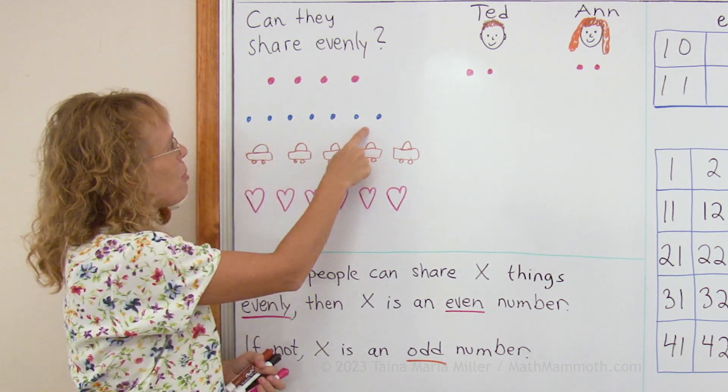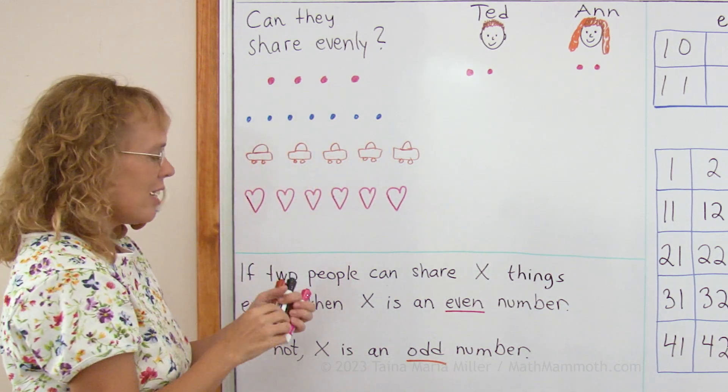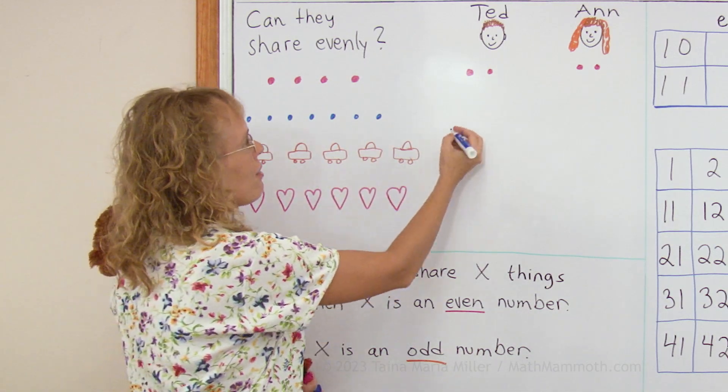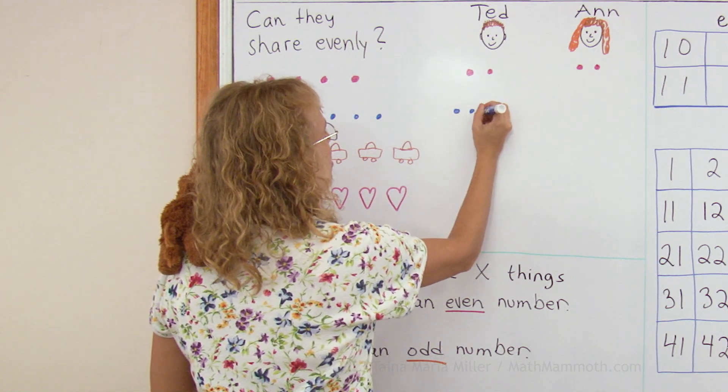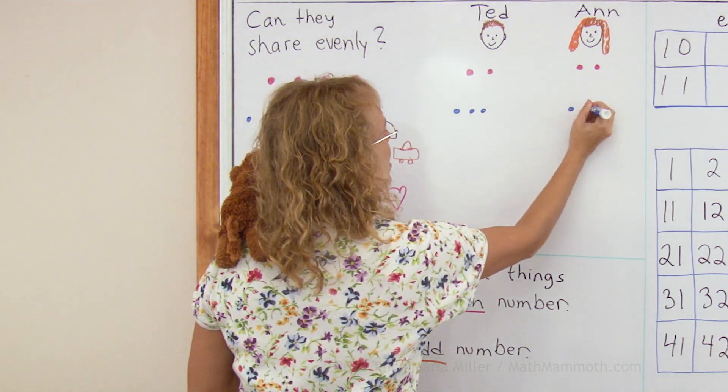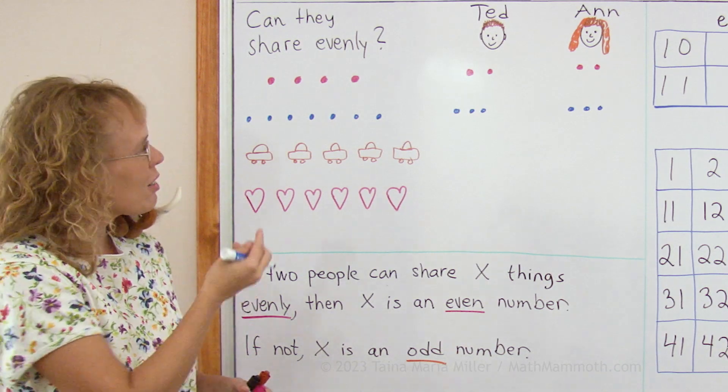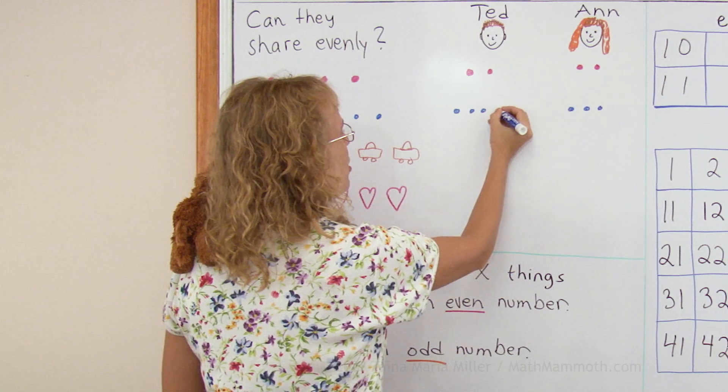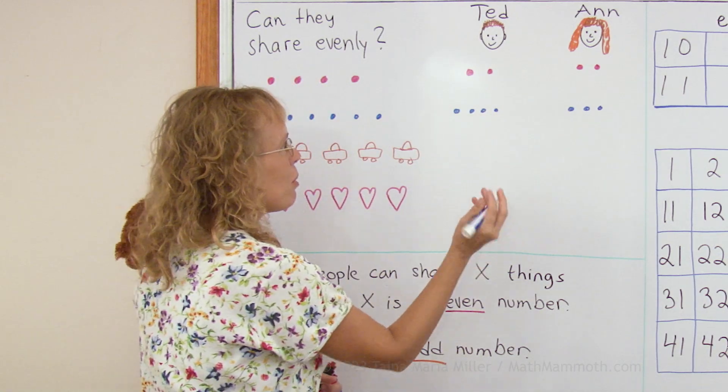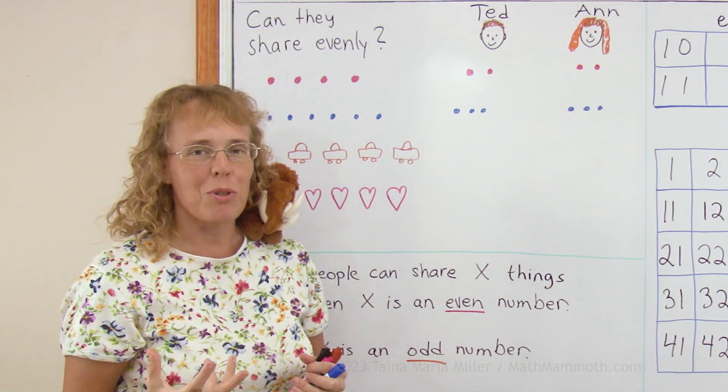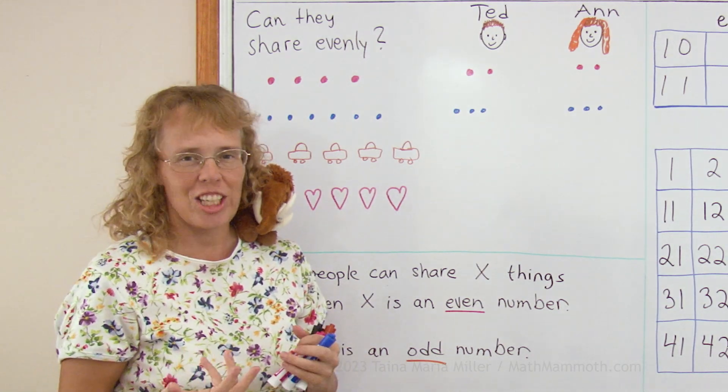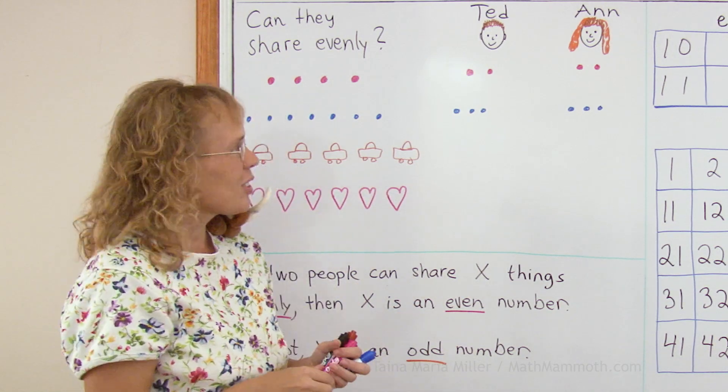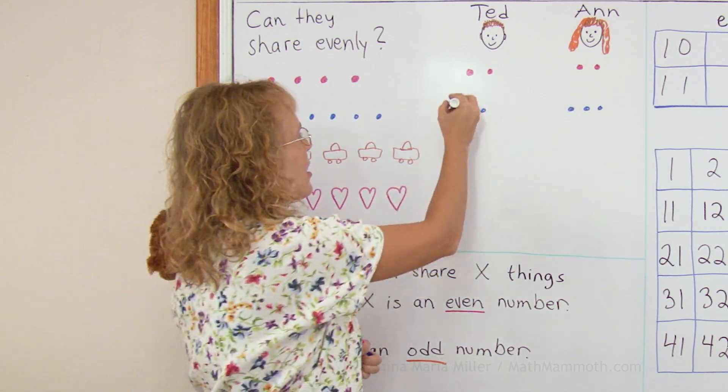Now how about these blueberries? One, two, three, four, five, six, seven. Seven blueberries, can they share them evenly? Let's say that I put three here and three here, but that makes six, and now there's seven of them. So I cannot put, if I put one here, then Ted has one more, or if I put it here, then Anne would have one more, so it wouldn't be an even sharing. So therefore, they cannot share these seven blueberries evenly. So seven is not an even number. This didn't work out.